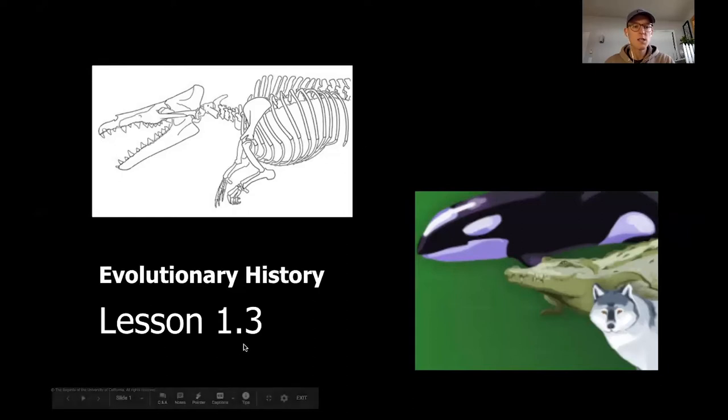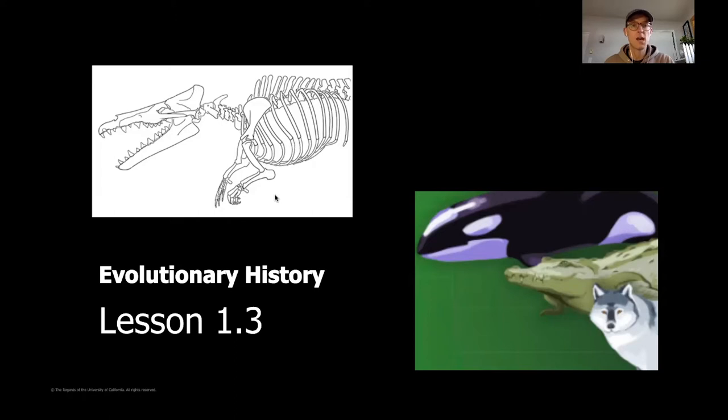So this is going to be lesson 1.3. Hopefully you have completed lesson 1.2, which was the lesson before this, where we started to think about how we, as our role in this unit as paleontologists, are going to figure out what type of fossil this is so that we know where exactly to put it at a museum. Last lesson, we spent some time starting to think about what are things that animals have in common so that we can start to think about this fossil right here. Which is it going to be most closely related to? A whale, a crocodile, or a wolf?